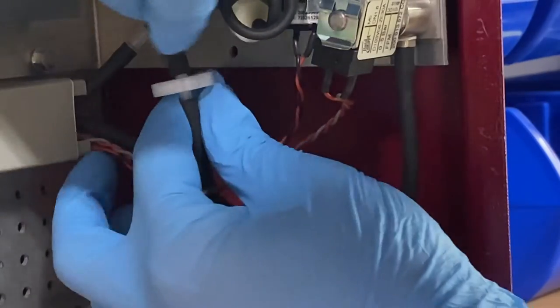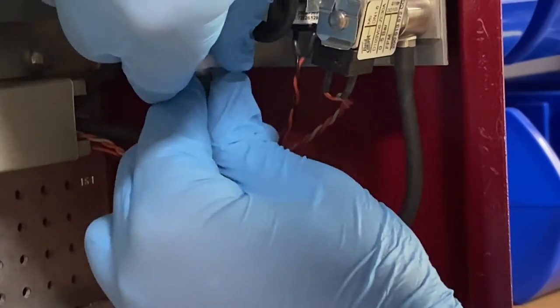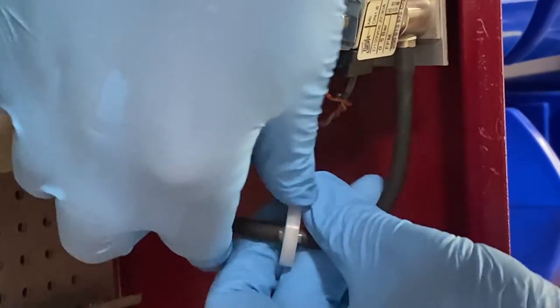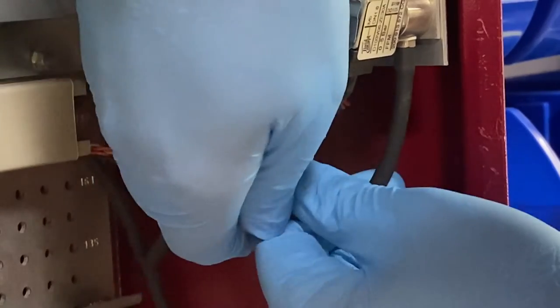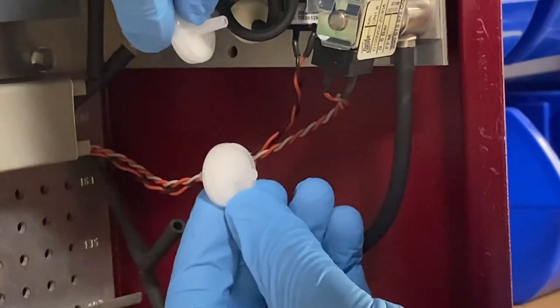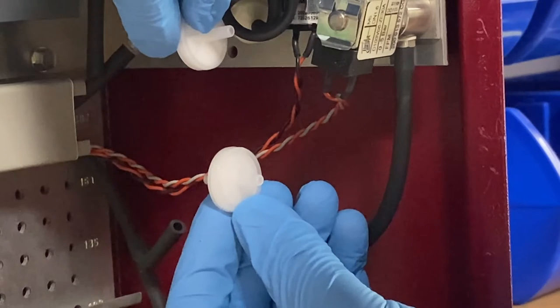To remove both filters simply unfasten the tubing from both sides. No special tools should be required, however do be aware that the tubing will probably have tightened with use.